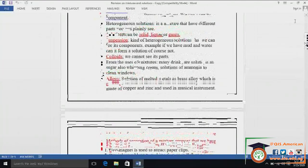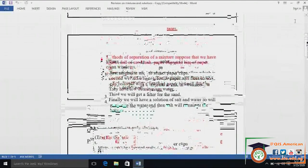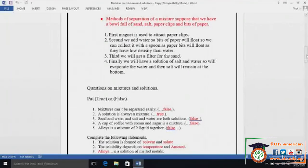It's a quick revision on the mixtures and solutions. Now we are going to talk about methods of separation of mixtures. Remember, if we have a big bowl, and we did it already in our class, and we put sand, salt, bits of paper, and paper clips. First of all, what we're going to do. First, we'll take the magnet to attract all the paper clips.